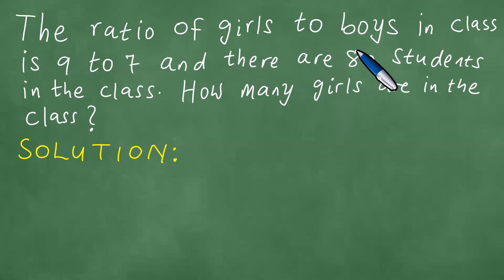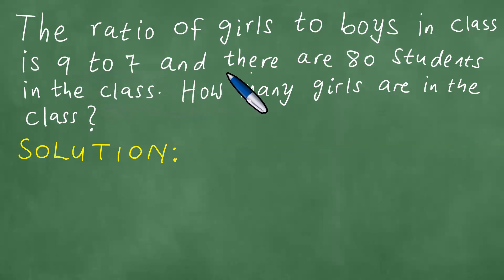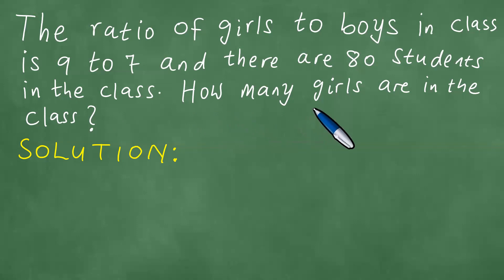The ratio of girls to boys in class is 9 to 7, and there are 80 students in the class. How many girls are in the class?